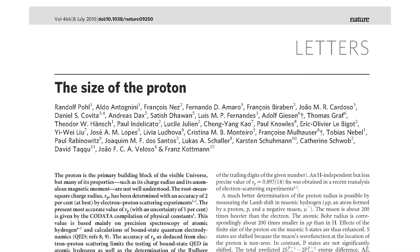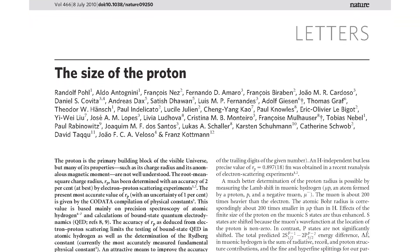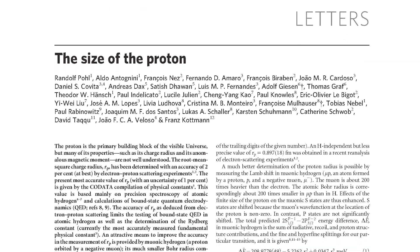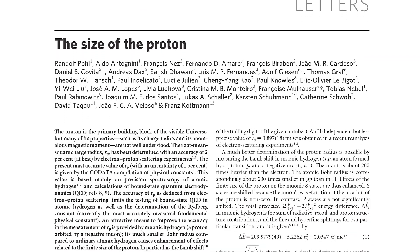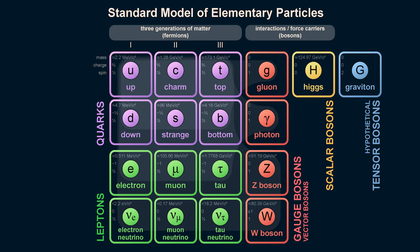In particular, the radius measured with electrons disagreed with a 2010 measurement of the radius with muons. Muons are leptons, just like electrons, but are heavier. You can think of them as a heavier twin of the electron — they are effectively the same other than their mass.